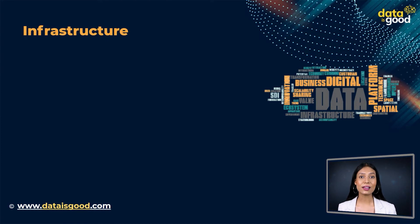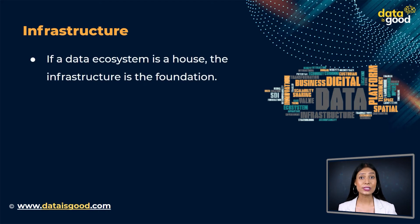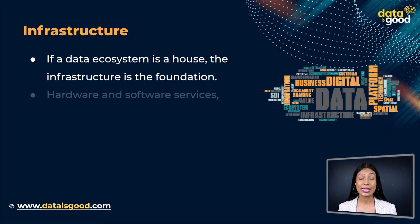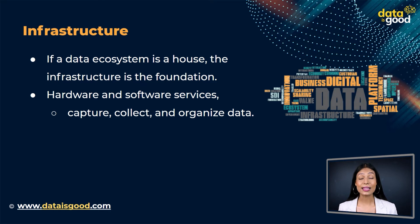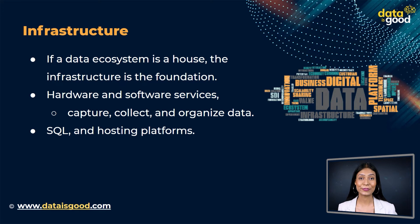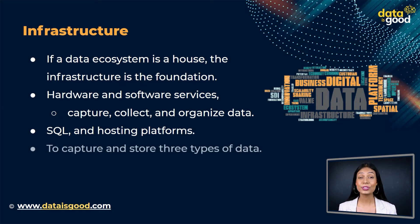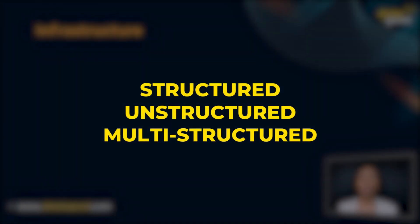The first element of data ecosystem is the infrastructure. If a data ecosystem is a house, then the infrastructure is the foundation. It is the hardware and software services that capture, collect, and organize the data. The infrastructure includes servers for storage, search languages like SQL, and hosting platforms. Infrastructure can be used to capture and store three types of data: structured, unstructured, and multi-structured.